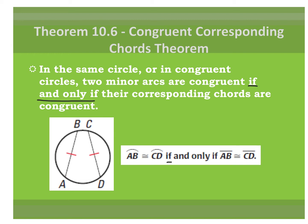Because of the 'if and only if,' it can go either way. If they give you congruency marks on the chords — like if they show you that AB is congruent to CD — then that tells you that the arc made by AB is congruent to the arc made by CD. And you can go the other way: if they tell you two arcs are congruent, you can conclude that those two chords are congruent.